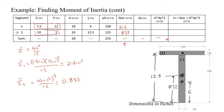Now we determine the d distances — the distance between the section centroid and each segment's centroid. For segment one: d1 = 8.32 − 6 = 2.32 inches. For segment two: d2 = 12.5 − 8.32 = 4.18 inches.